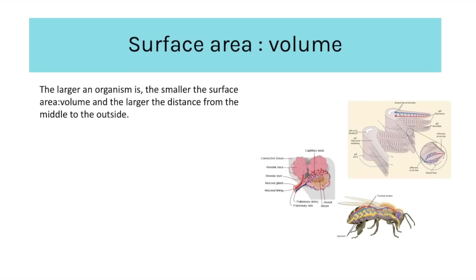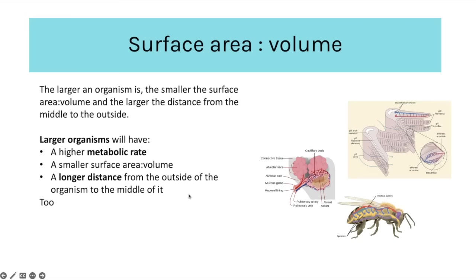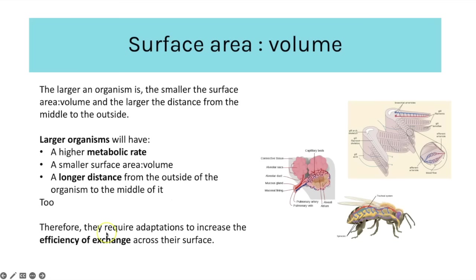In contrast, larger organisms have a smaller surface area compared to their volume, meaning there is a larger distance from the very outside of the organism to the very centre. On top of that, larger organisms also have higher metabolic rates, meaning they require more oxygen for respiration to create ATP. They have a longer distance from the outside to the middle, and therefore require adaptations to increase the efficiency of exchange — leading us to look at the gills in fish, the alveoli in humans, and the tracheal system in insects.